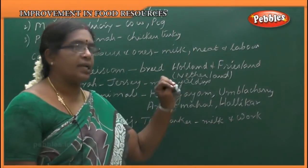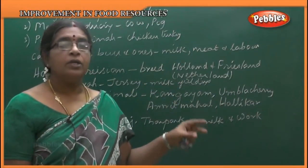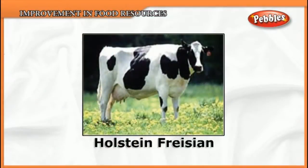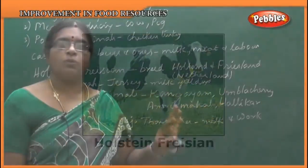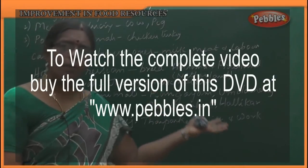The two breeds originate from the Netherlands. The cow has white and black patches. For over 2000 years they have been used for milk production only. This breed gives a large amount of milk.